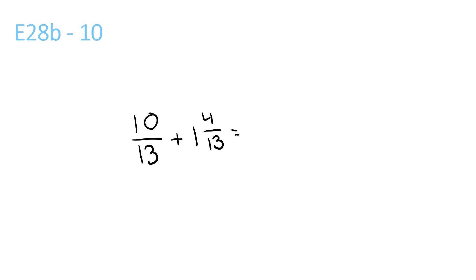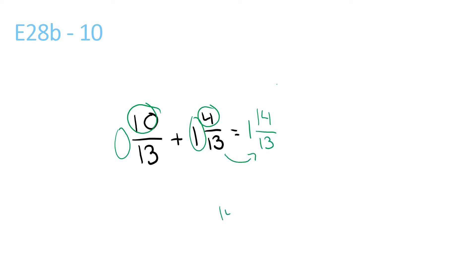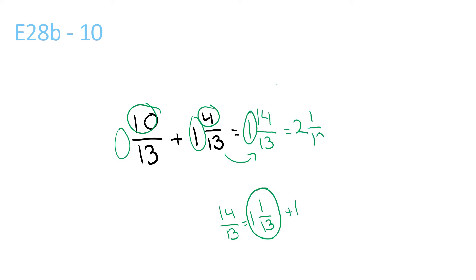For this one, we've got nothing plus 1, which is 1. Then 10 plus 4 is 14, and then bring this number over — 13. Now 14 over 13 is the same as 1 and 1 over 13. So it's 1 and 1 over 13 plus this 1 in front, which is equal to 2 and 1 over 13.